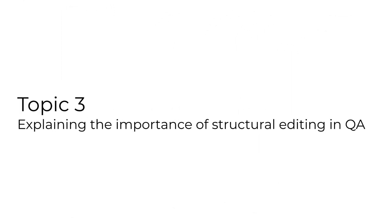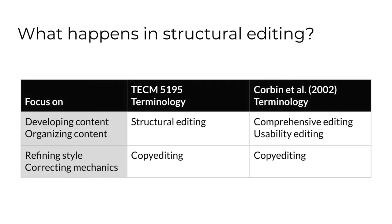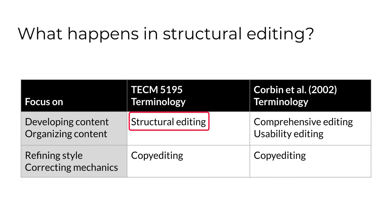Your assigned reading argues that technical editing can provide the same QA process for content that software QA testing does for code, but the authors really mean structural editing. It's important to note that the authors of your reading — Corbin et al. — use terms from the levels of edit differently than those I've adopted for our course. I created a table so you could see the differences. When Corbin refers to 'comprehensive editing,' they mean editing focused on content. The terminology I've borrowed is from the Editors' Association of Canada, which uses 'structural editing' for this focus on content and 'comprehensive editing' to refer to a focus on all levels of edit at one time.